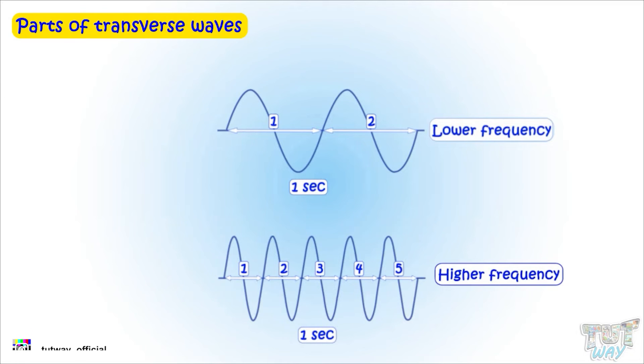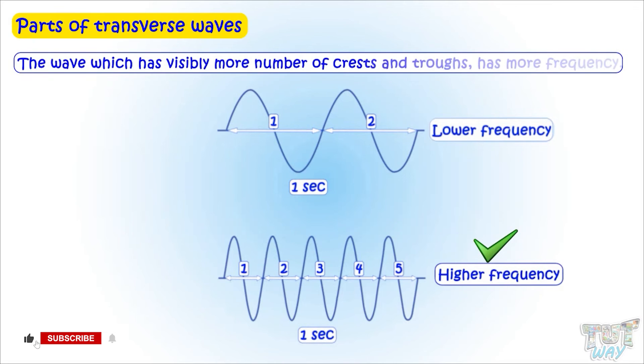That is, more number of wavelengths are produced in one second. And we know what's a wavelength: it's a distance between two consecutive crests or two consecutive troughs, or the distance covered by one crest and one trough. So, the wave which has visibly more number of crests and troughs has more frequency. So, we have learned parts of transverse waves.